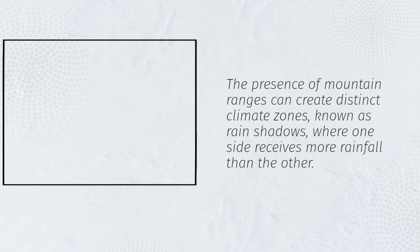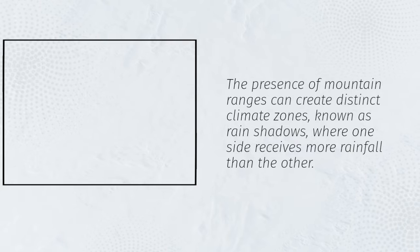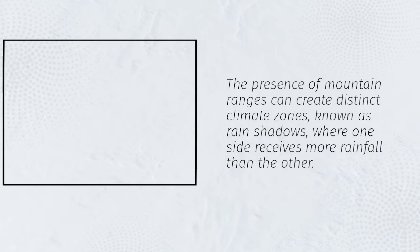The presence of mountain ranges can create distinct climate zones, known as rain shadows, where one side receives more rainfall than the other.